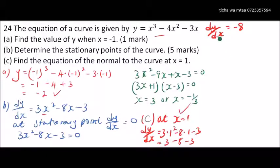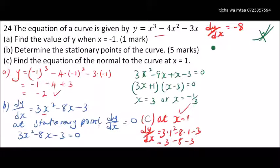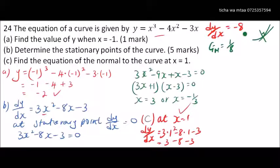The normal is perpendicular to the tangent. If this is the tangent, the normal is the line perpendicular to it. For perpendicular lines, the product of their gradients equals -1. So the gradient of the normal = 1/8, since (1/8) × (-8) = -1.